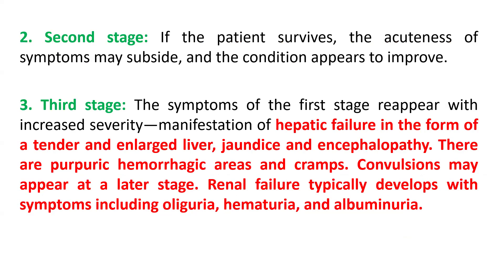In the third stage, the symptoms of the first stage reappear and increase in severity. This includes hepatic failure in the form of a tender and enlarged liver, jaundice, brain dysfunction such as encephalopathy, purpuric hemorrhagic areas, and cramps. Convulsions may appear and renal failure typically develops with symptoms including oliguria, hematuria, or albuminuria.